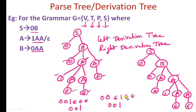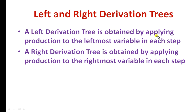A left derivation tree is obtained by applying production to the leftmost variable in each step. A right derivation tree is obtained by applying production to the rightmost variable in each step. Now let me take one more example and find the left derivation tree and right derivation tree for more clarity.